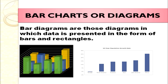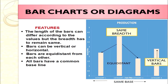Once we have constructed the table, we can move on to bar charts or diagrams. Bar diagrams are those diagrams which present the data in the form of bars or rectangles. Bar diagrams may be drawn horizontally or vertically. Before discussing different types of bar diagrams, we must know the key features of bars, and only then can we construct different types of bar charts.